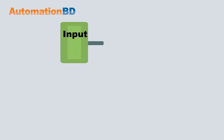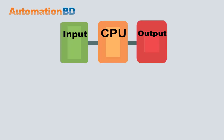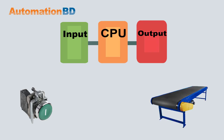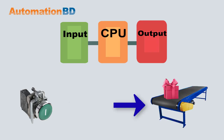Every PLC has three parts: input, CPU, and output. Suppose we have a push button and a conveyor belt — when the push button is pressed, the conveyor belt runs.